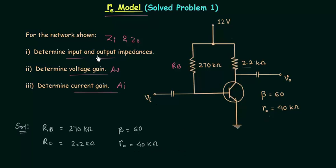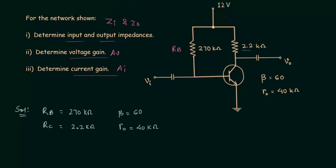To find out all these parameters we need the dynamic emitter resistance RE'. We already know that RE' is equal to 26 millivolts divided by the DC value of the emitter current. To find this current we need the DC equivalent circuit, which we obtain by removing the two capacitors.